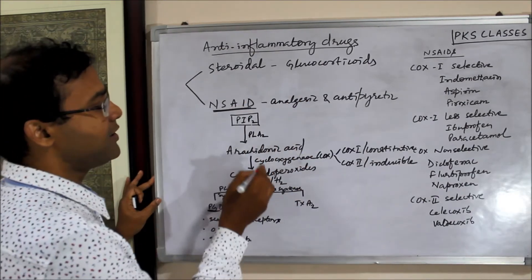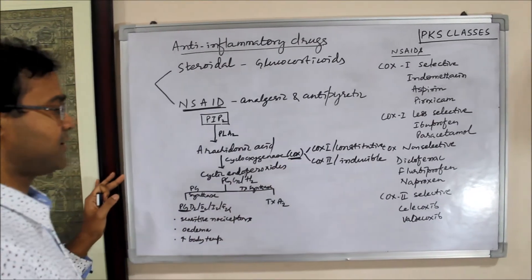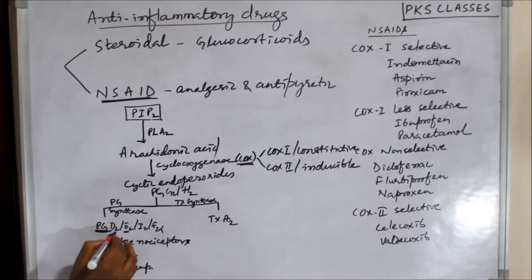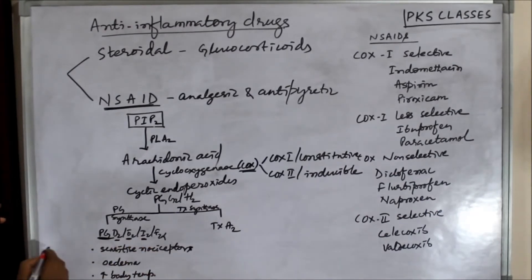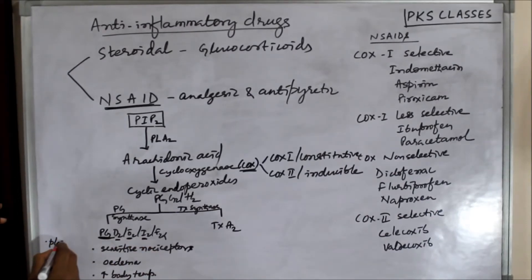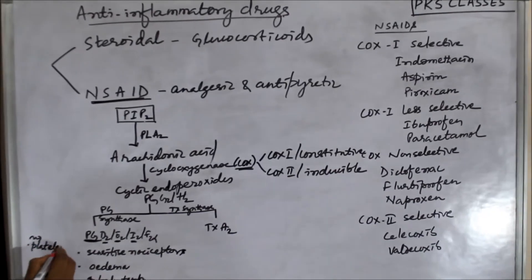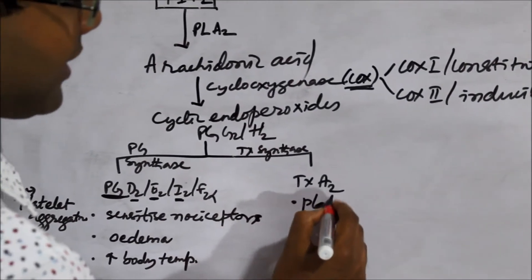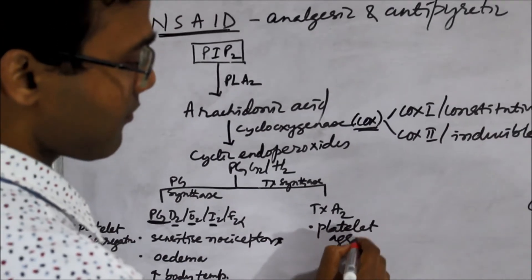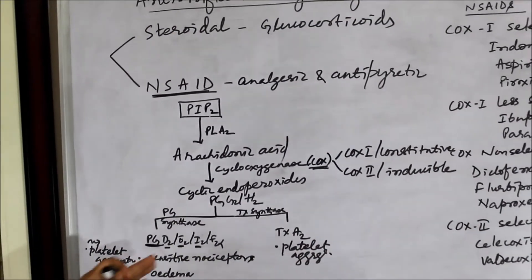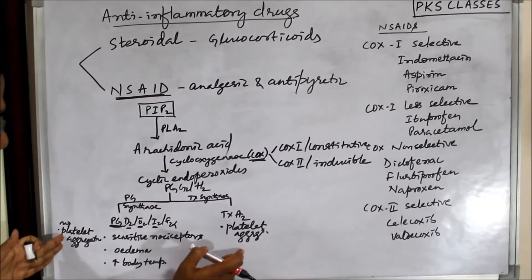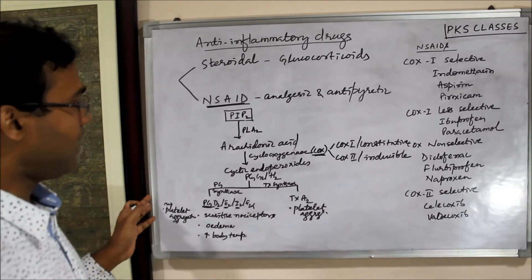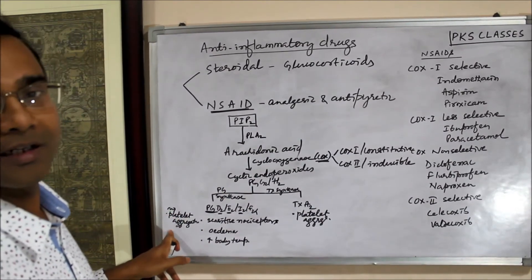So if we inhibit the COX (cyclooxygenase), then we can inhibit the production of prostaglandins. Prostaglandins D2 and I2 inhibit platelet aggregation, while thromboxane A2 causes platelet aggregation. If COX inhibitors are used, the net balance results in inhibition of platelet aggregation.